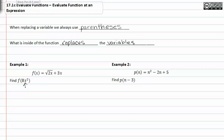So let's rewrite our function: f is equal to the square root of two times what was supposed to go into parentheses, plus three times again what was supposed to be put in parentheses. The 8x² is what's supposed to go in each one of these empty spaces.